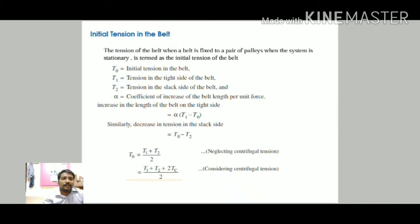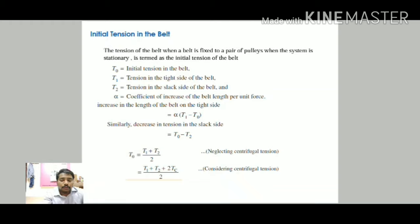The initial tension T0 is the tension in the belt when it is fixed to a pair of pulleys with the system stationary. Neglecting centrifugal tension: T0 = (T1 + T2)/2. Considering centrifugal tension: T0 = (T1 + T2 + 2Tc)/2.